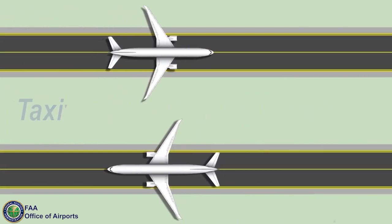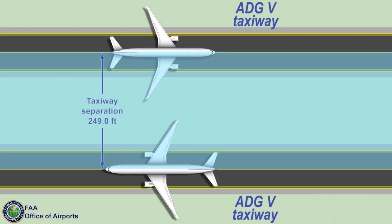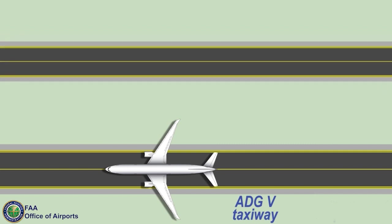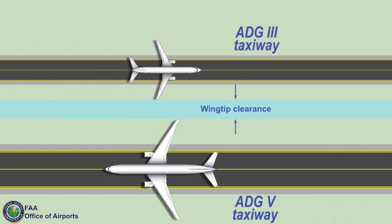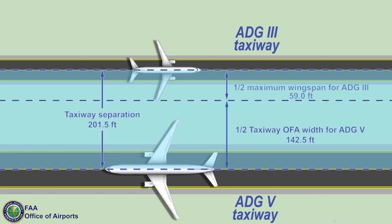In this example, parallel taxiways designed for the same ADG-5 have a separation distance of 249 feet, which ensures adequate wingtip clearance between the two taxiing aircraft. For parallel taxiways designed for different ADGs, calculate the separation distance by adding half of the taxiway OFA of the larger ADG taxiway to the aircraft wingspan for the smaller ADG taxiway. In the example, half the ADG-5 taxiway OFA, which is 142.5 feet, added to half the ADG-3 wingspan, which is 59 feet, obtains a separation distance of 201.5 feet between an ADG-5 and ADG-3 taxiway.